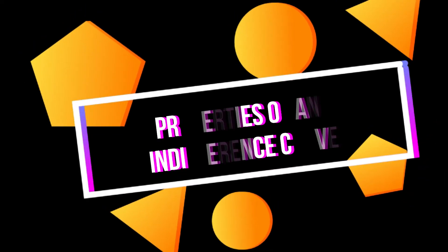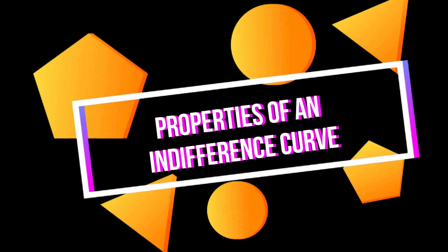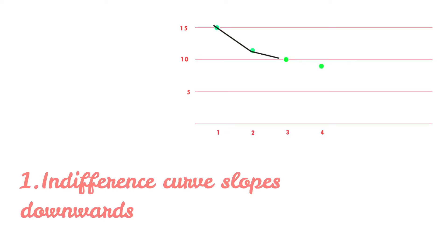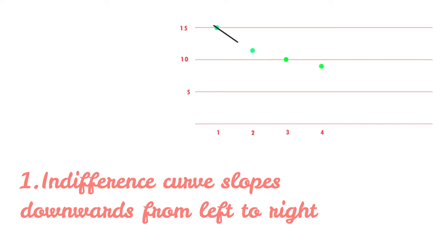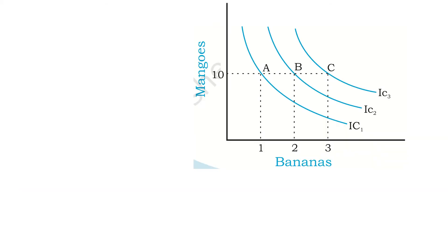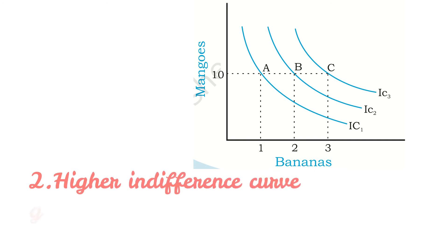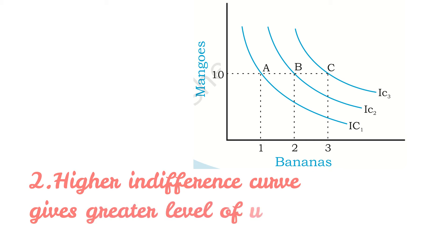Let's move on to the properties of an indifference curve. An indifference curve slopes downwards from left to right, which means that in order to have more of banana, the consumer has to forego some mangoes. Secondly, as long as the marginal utility of a commodity is positive, an individual will always prefer more of that commodity, as more of the commodity will increase the level of satisfaction. This means a higher indifference curve gives a greater level of utility.